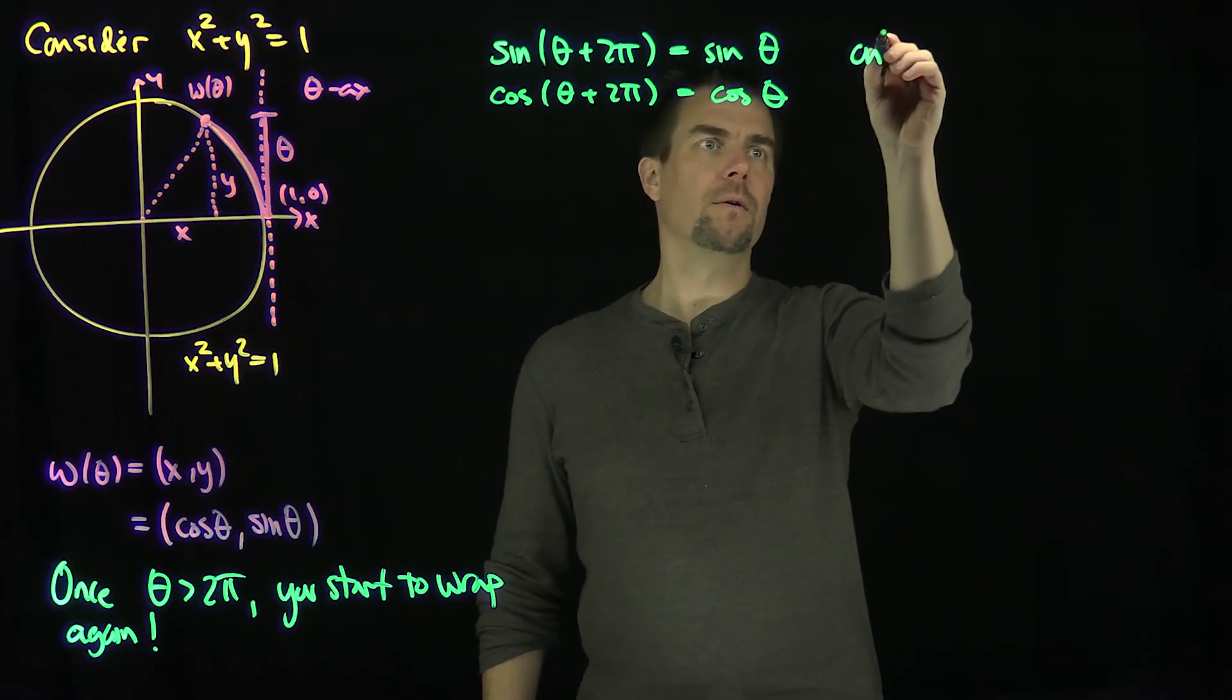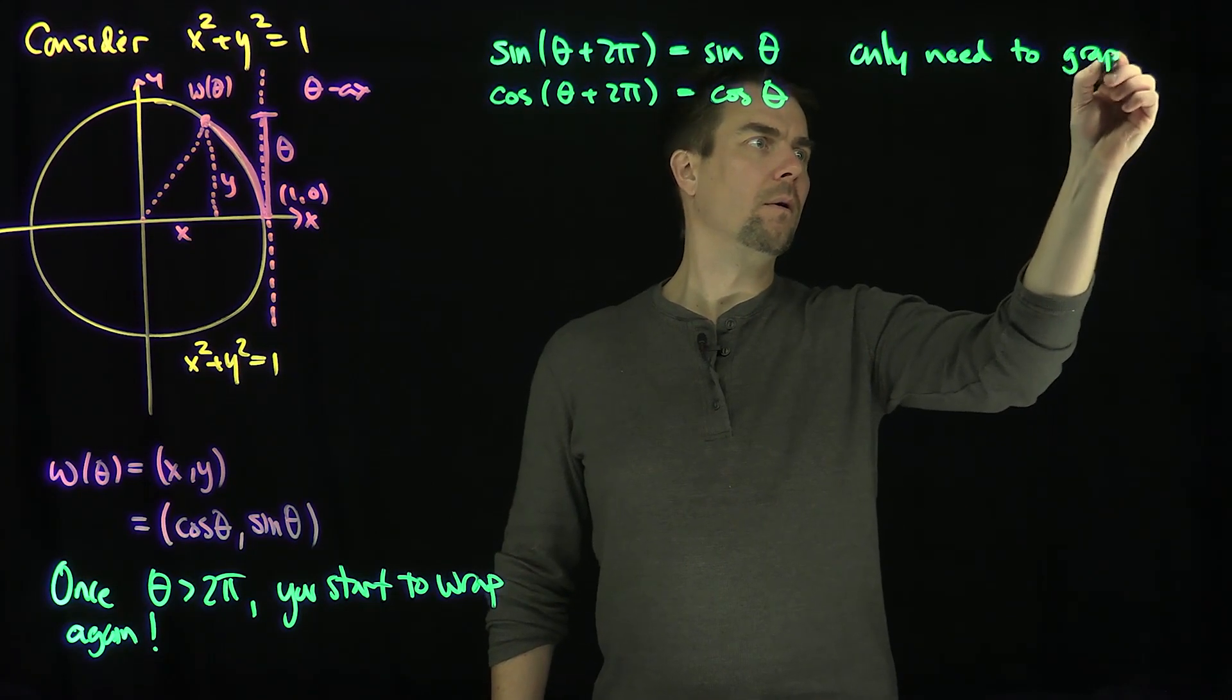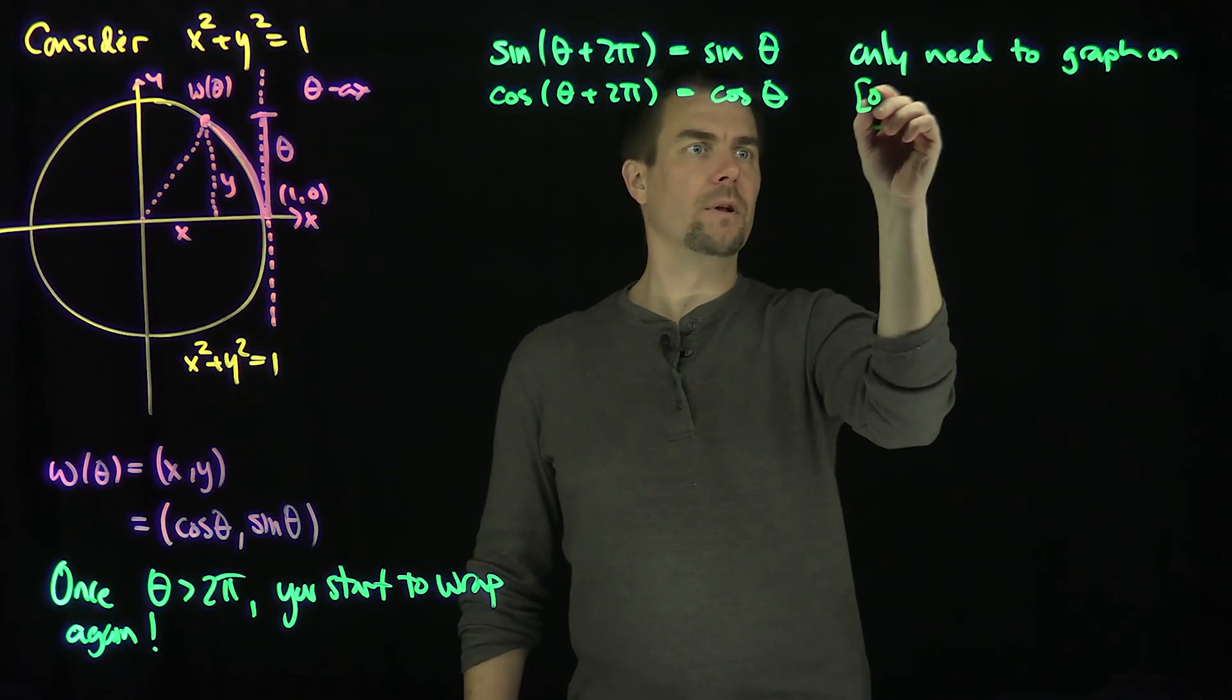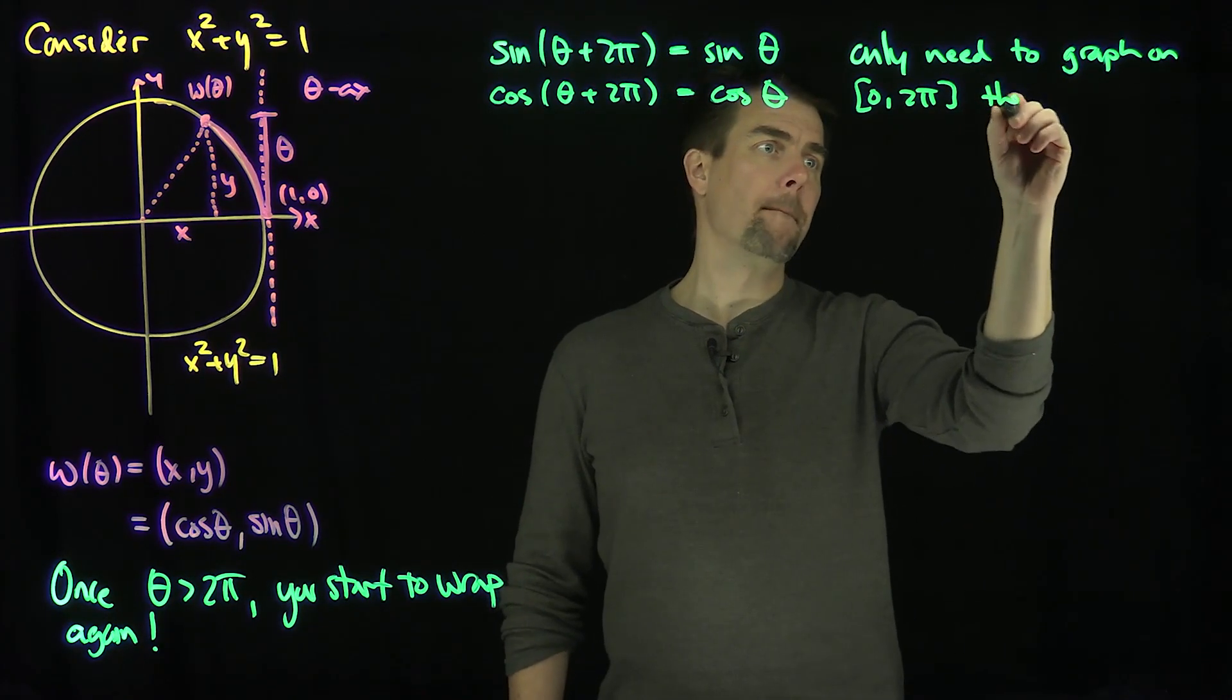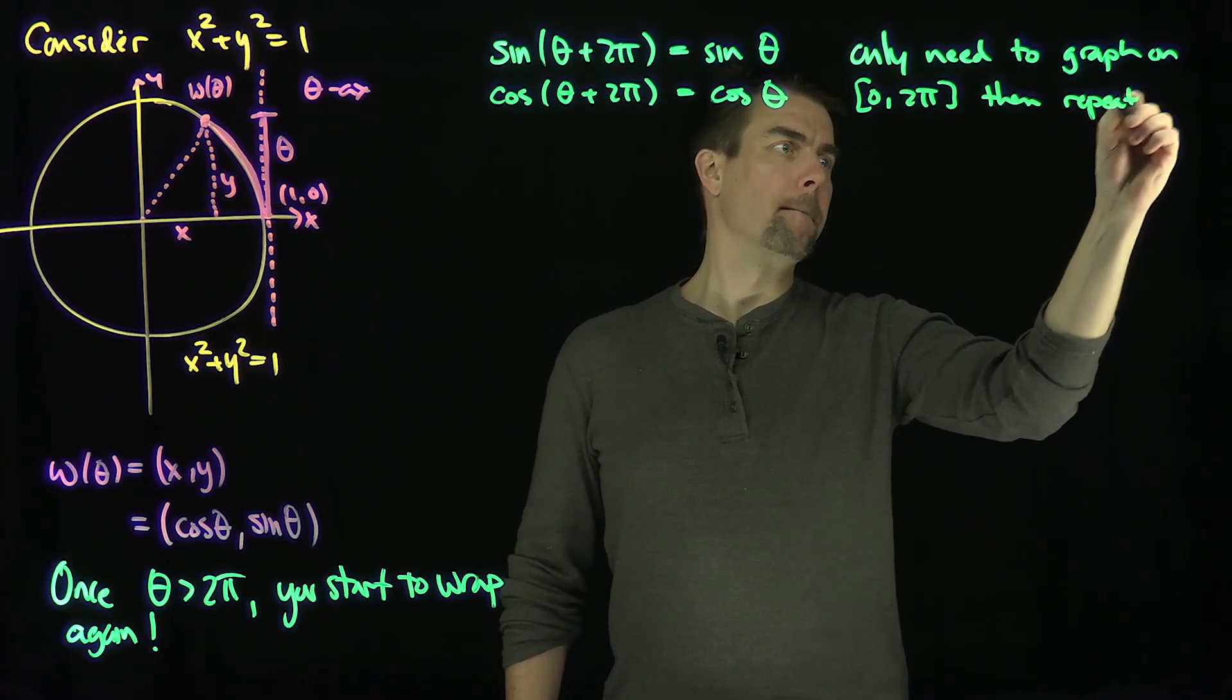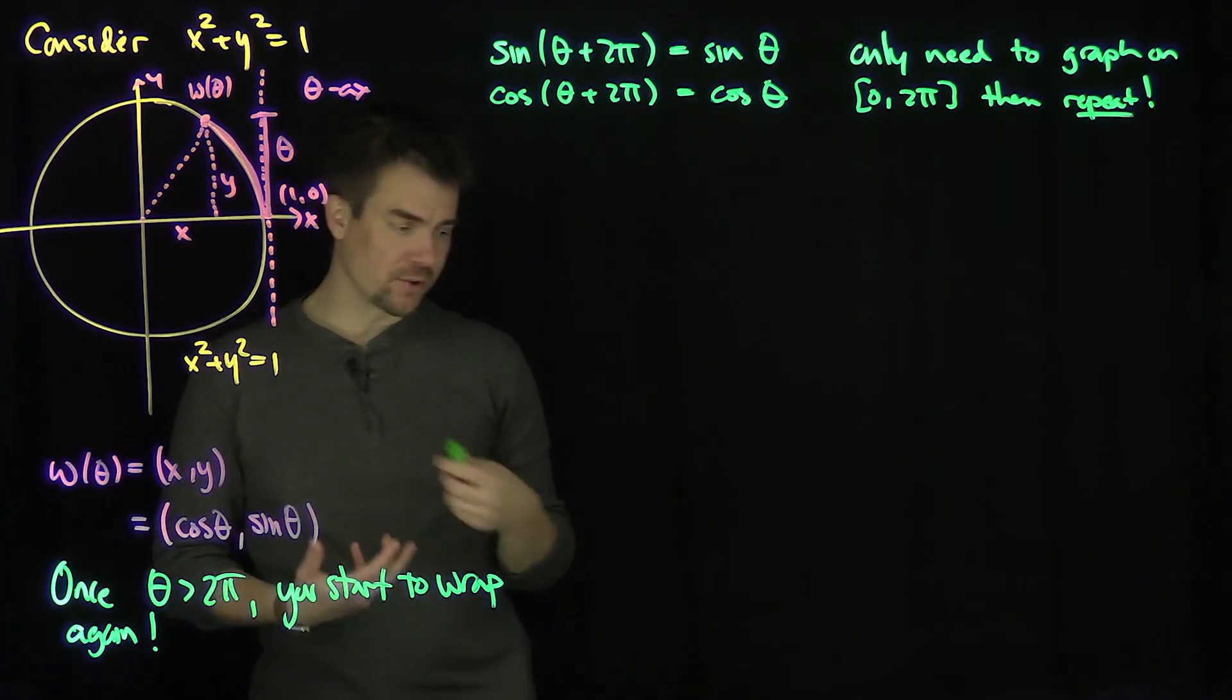So what we do, if we're going to graph these functions, we just need to graph them on an interval of length 2 pi to get the entire behavior of sine and cosine. So we only need to graph on the interval 0 to 2 pi, and then we repeat. And that's great.